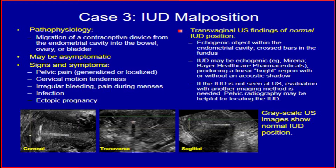Transvaginal ultrasound findings of normal IUD position: echogenic object within the endometrial cavity, with the crossbars in the fundus. The IUD may appear echogenic, producing a linear bright region with or without an acoustic shadow. If the IUD is not seen at ultrasound, evaluation with another imaging method is needed. Pelvic radiography may be helpful for locating the IUD. These grayscale ultrasound images show normal IUD position.